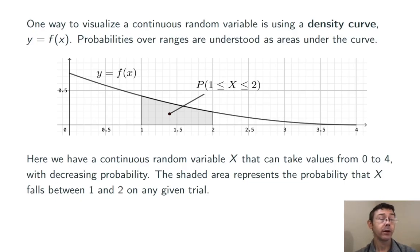I've drawn a random variable, x, that can take values between 0 and 4 with decreasing probability. The region that I've shaded there represents the probability that x falls between 1 and 2 on some given trial.